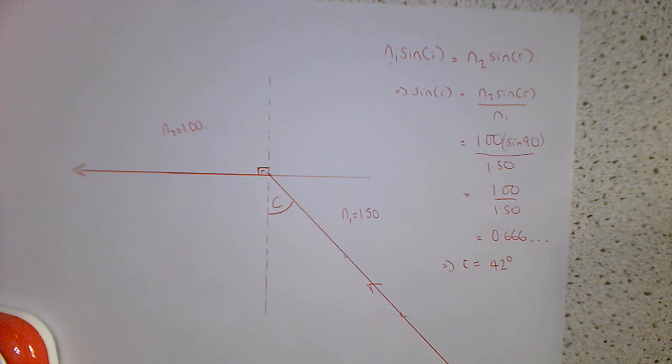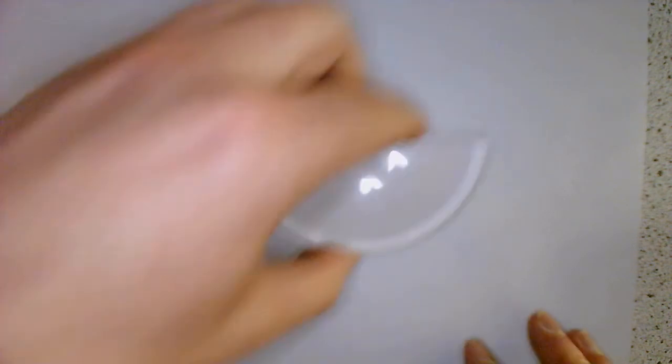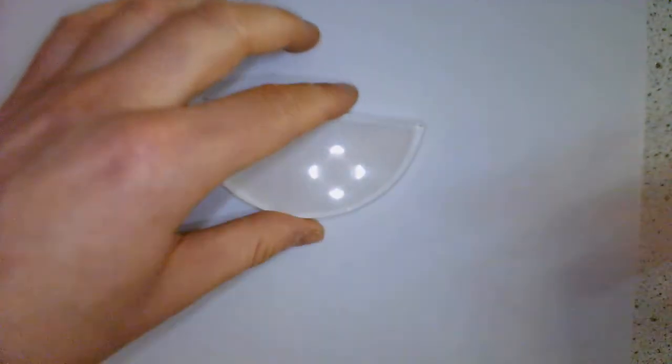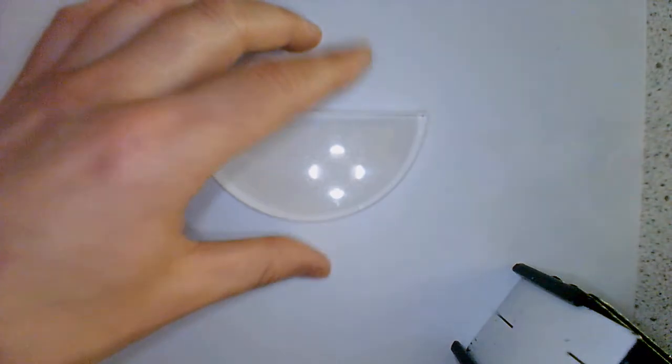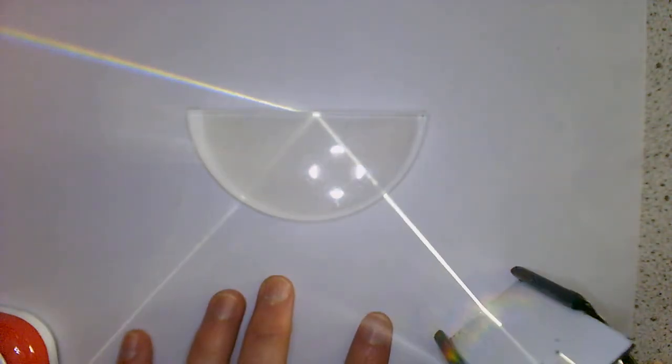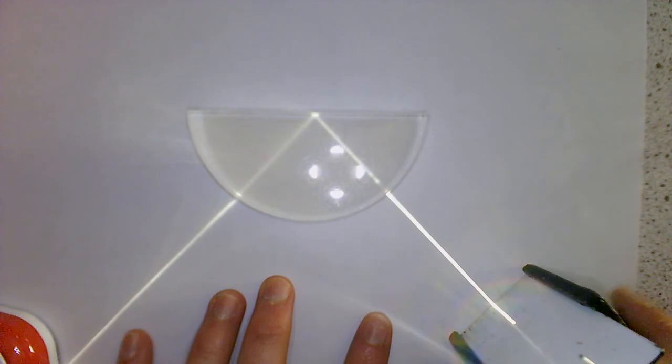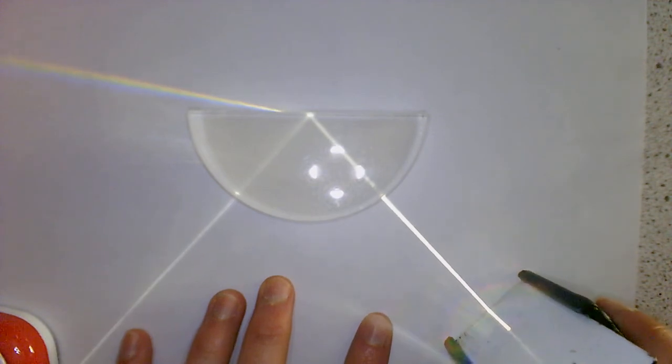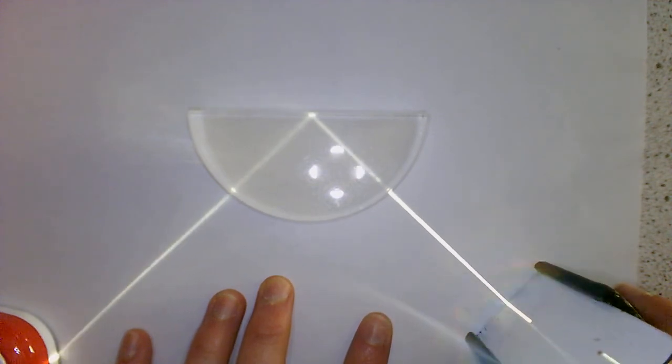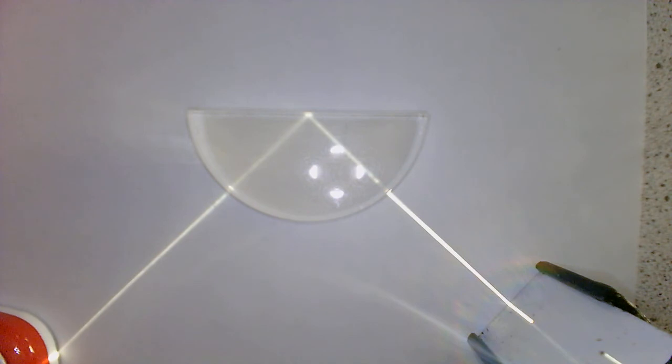Now I just want to quickly show you the other key thing we need to know about total internal reflection. So let's come back to our light box so we can actually see this in action. So this here was our critical angle. So the key thing is if I make the angle of incidence bigger all of the light is now reflected. So if your angle of incidence is bigger than the critical angle we get what's called total internal reflection, because all the light gets reflected.